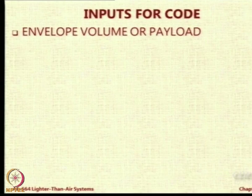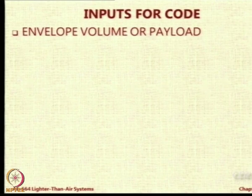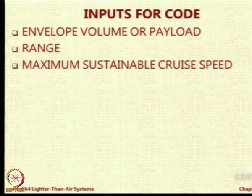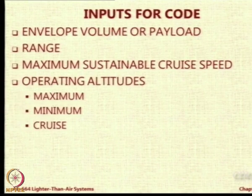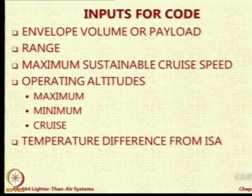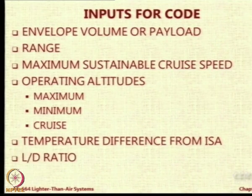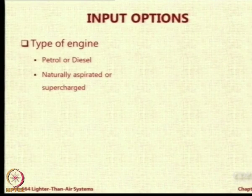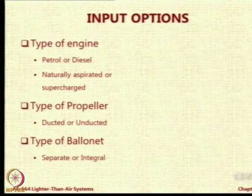Regarding inputs for the code — ultimately we made it into a Fortran program and also have a spreadsheet. The first input is the envelope volume or payload, depending on whether you are using it in analysis mode or design mode. Then the range, then the maximum sustainable cruise speed to size the engine, then operating altitudes — maximum pressure altitude and cruise altitude — for volume sizing. Also whether operating in ISA or non-ISA conditions, the length-to-diameter ratio, and number of fins, basically four. Other inputs include type of engine, type of propeller, and type of ballonet.